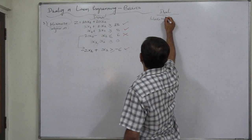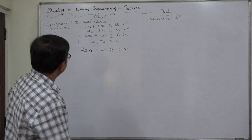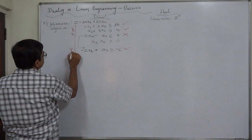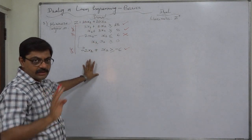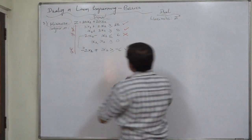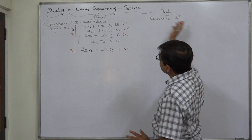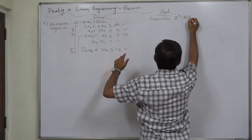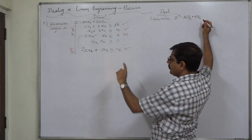The objective will now be maximize z* or z(y). We have three constraints in the primal, so there will be three decision variables in the dual: y1, y2, y3. We have two variables in the primal, so we will have two constraints in the dual. The right-hand side values of the constraints will be the coefficients in the objective function.